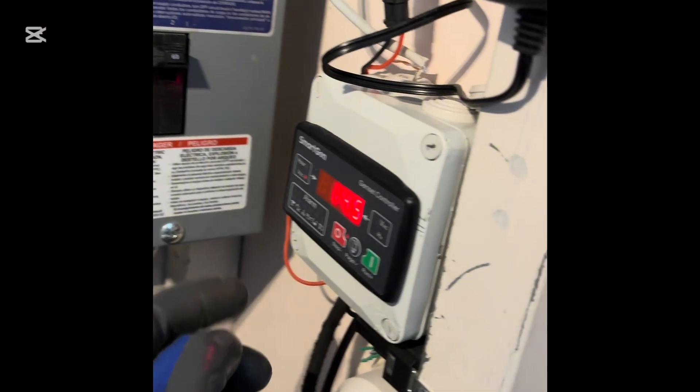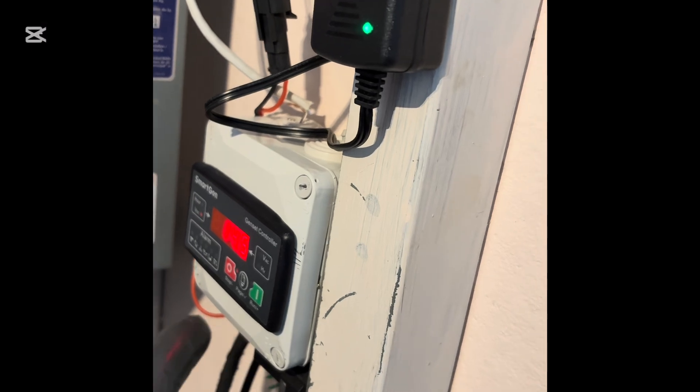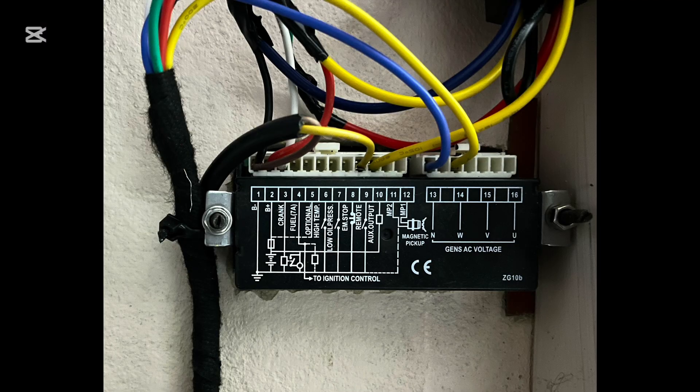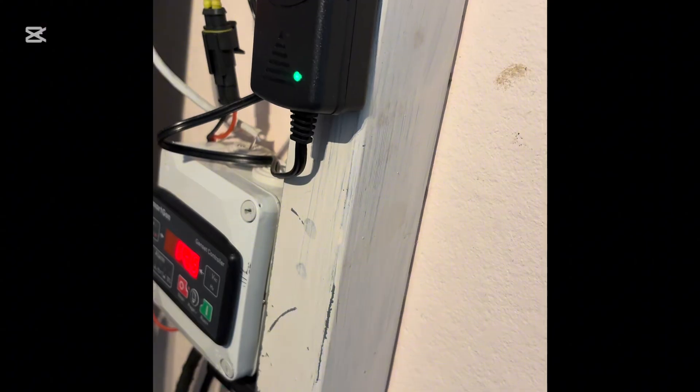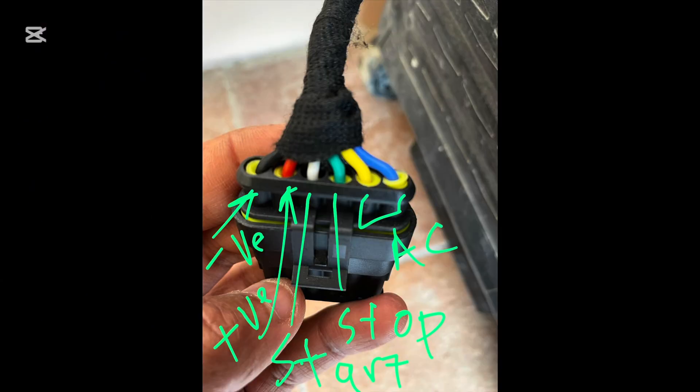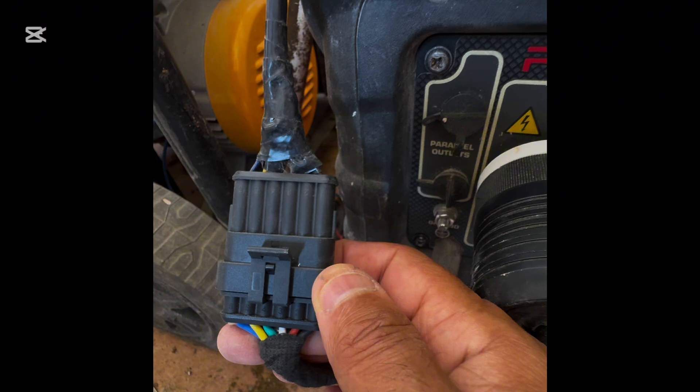To set up the generator controller you have six lines going from here to the generator. One line is the battery positive, battery negative, generator start signal or starter signal, kill switch signal, and then you have two feedback from the generator with 120 volt into the controller for the controller to know that the generator started. Those are the six terminals that come between the generator and the controller.